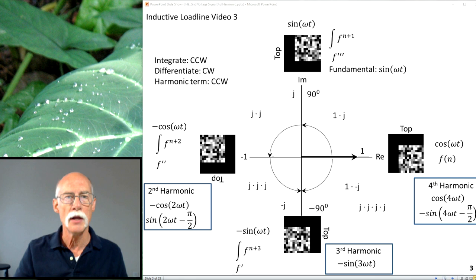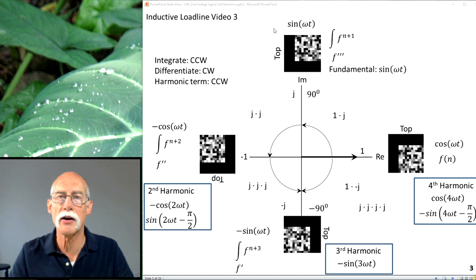So if you have, if you want to integrate sine, you go counterclockwise. The first integral sine is minus cosine. The first derivative of sine is cosine. The second derivative would be minus sine. Everything goes around the circle. That's why I like calculating in sines and cosines. What goes around comes around. In terms of harmonics, it's the same thing.